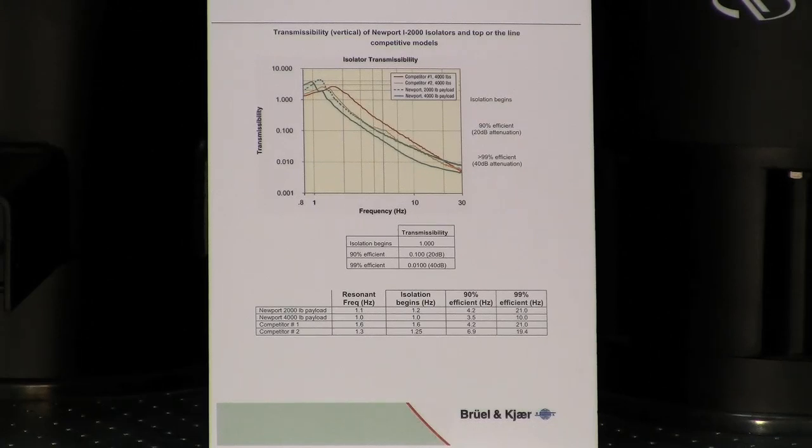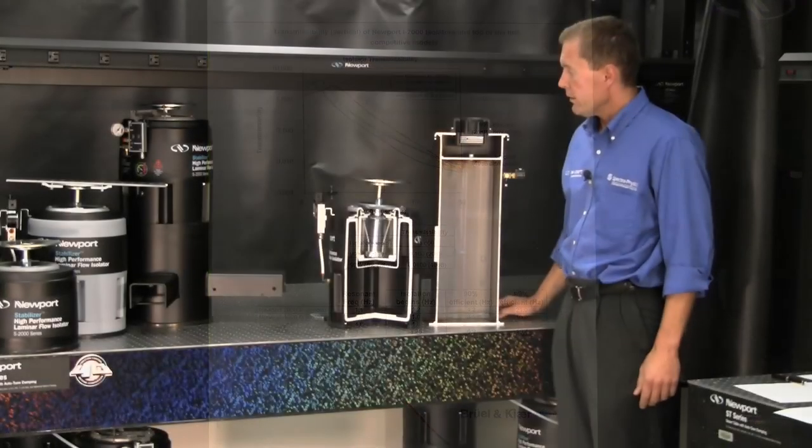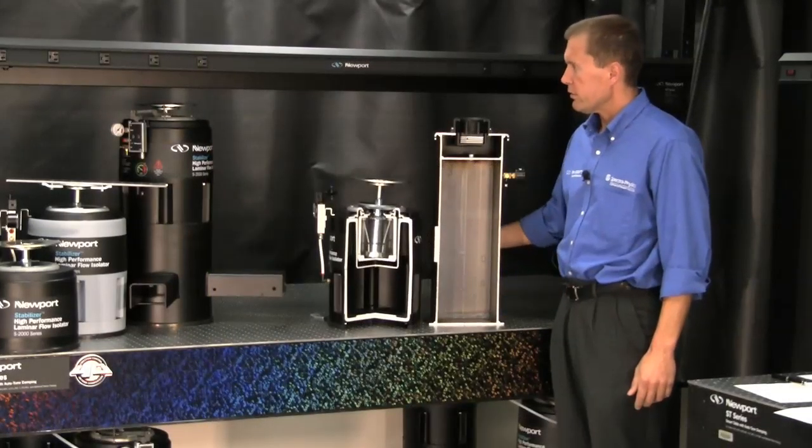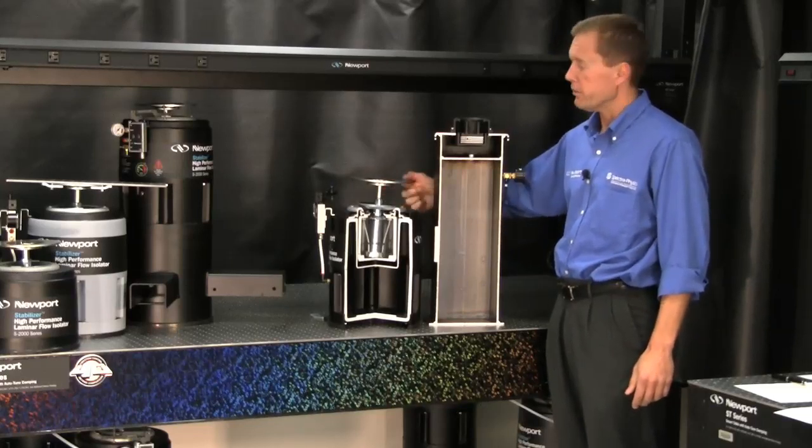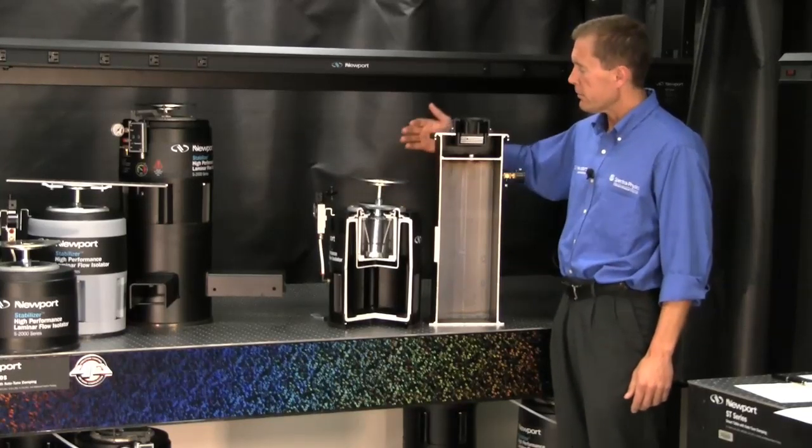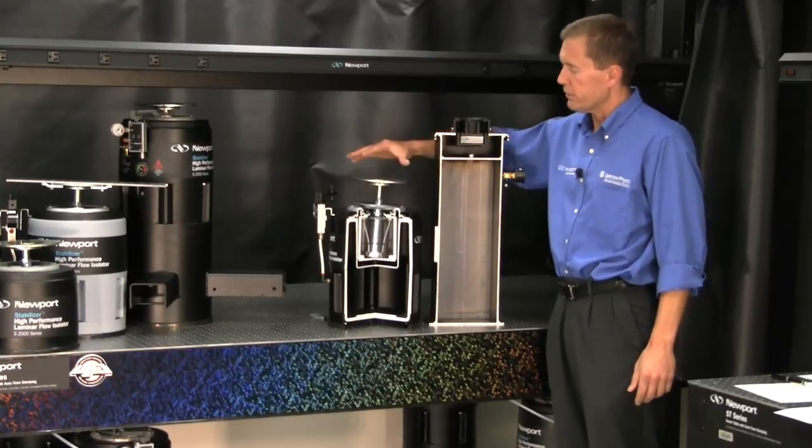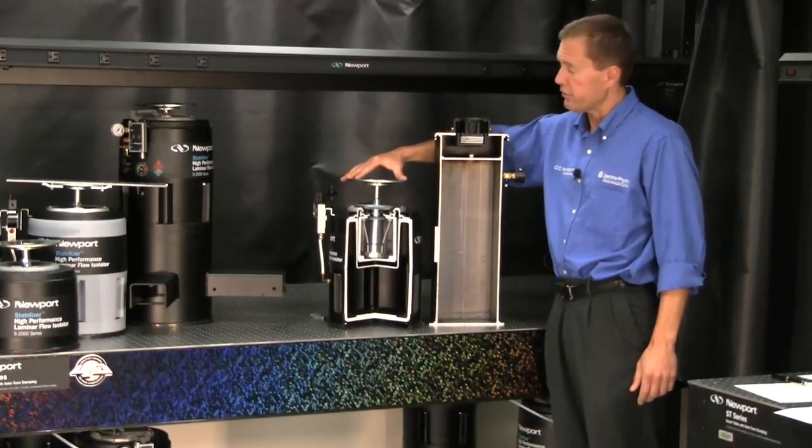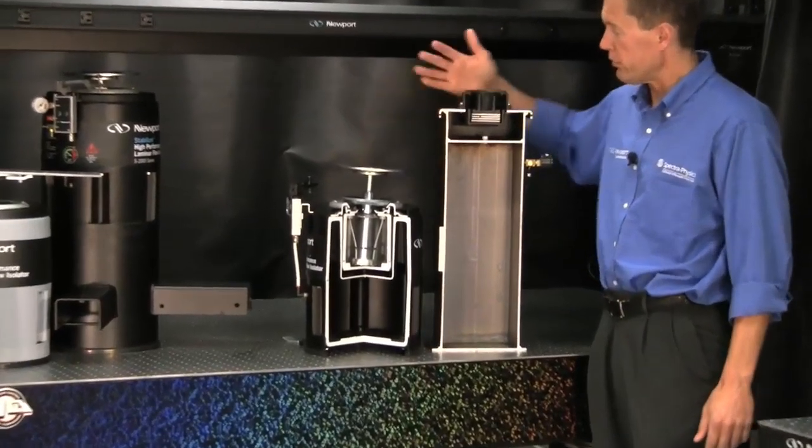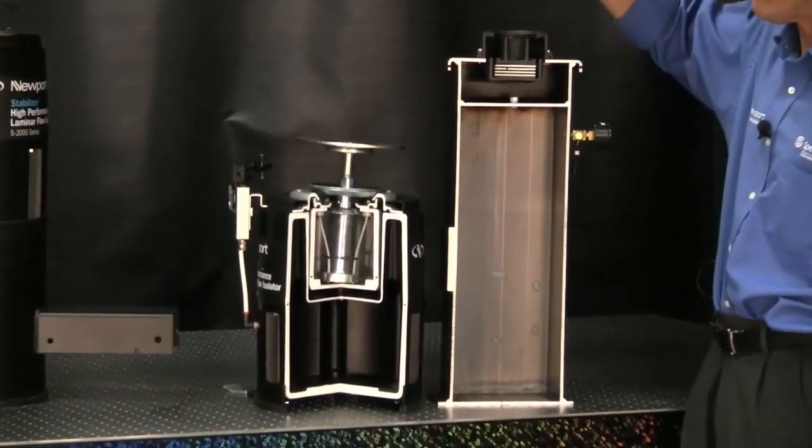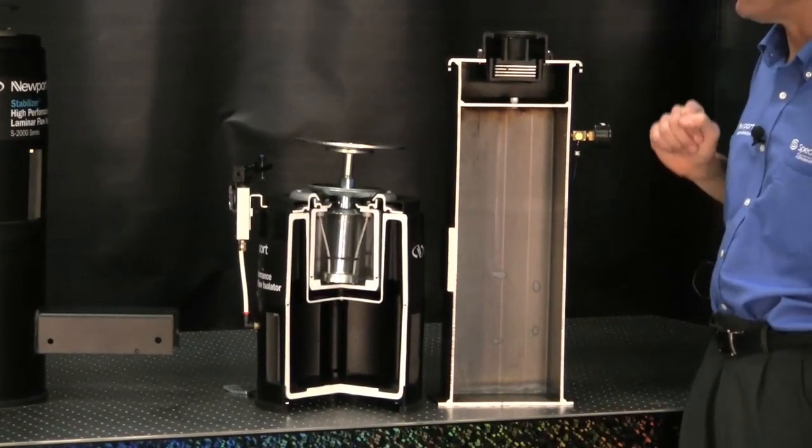So the Newport isolator attenuates the vibrations significantly quicker than the competitive models. There are two pieces of information you want to look at on an isolator: what's the resonant frequency and how fast does that roll off and provide damping. In the previous section we talked about isolator performance and how the features inside the isolator relate to performance. Now I'm going to talk about differences between our Newport stabilizer hybrid isolator and competitive model isolators. I have cross sections of both of them and I'll start from the top down and work my way through the isolators.